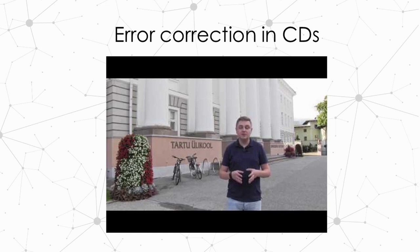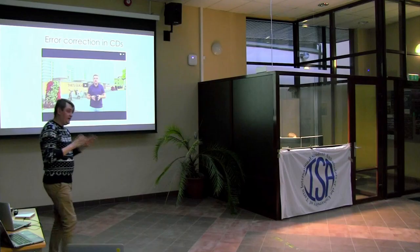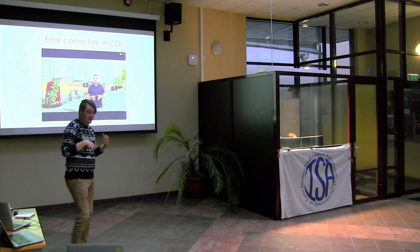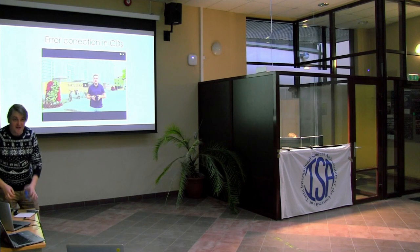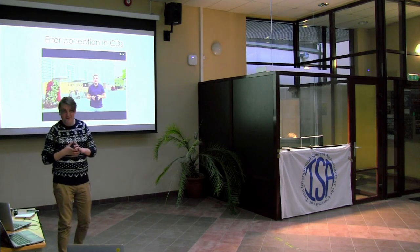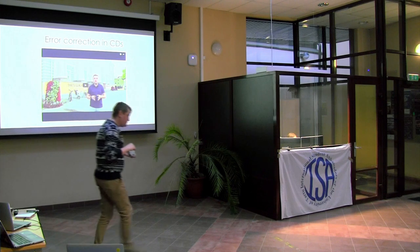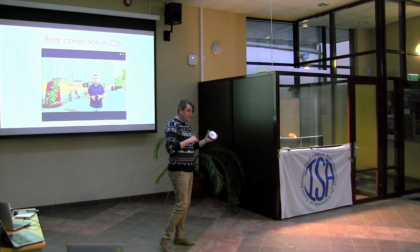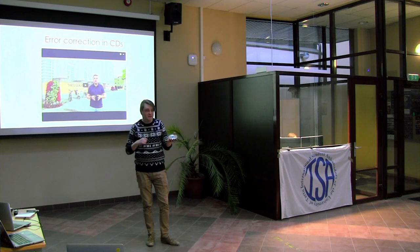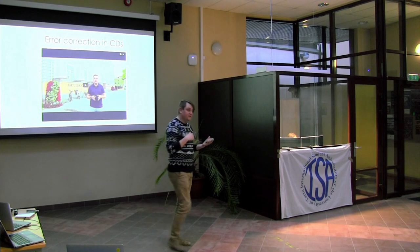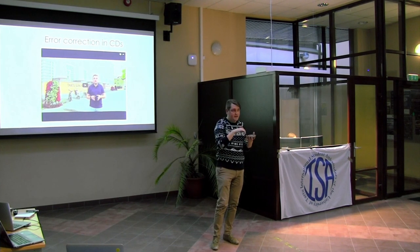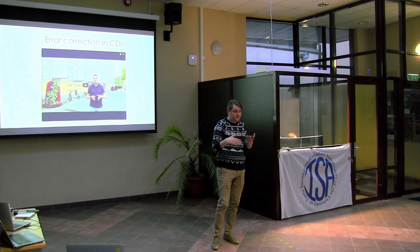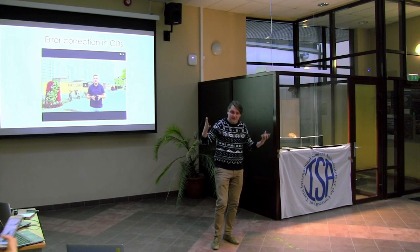Another type of data transmission is writing and reading data, and one example is a compact disc — a bit archaic now, but I found a reader so we can have a live presentation. It was invented by the end of the 80s, mostly by Philips in the Netherlands and Sony in Japan. All the data on it is encoded with error correction techniques, which is the idea of this talk.